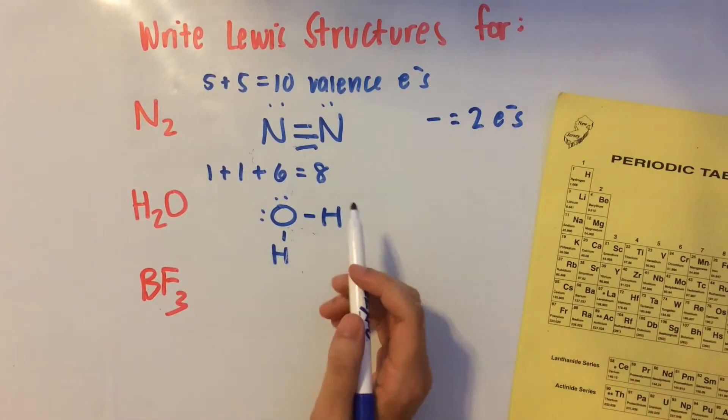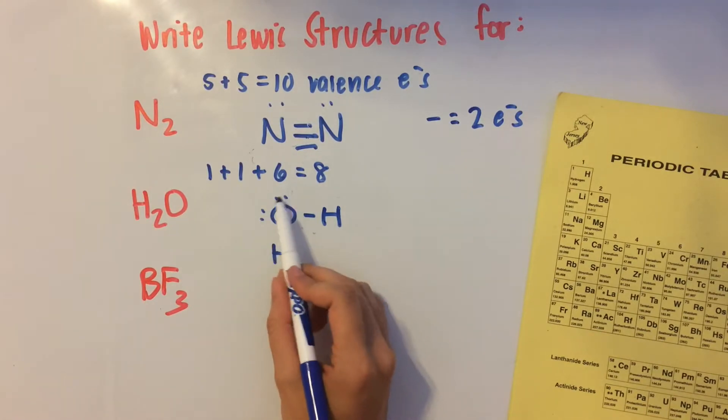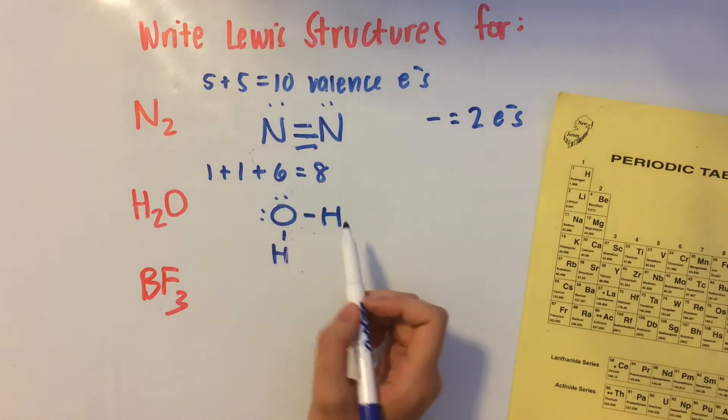Okay. So let's count how many valence electrons we have. 1, 2, 3, 4, 5, 6, 7, 8. And we're good.